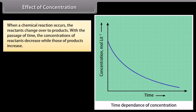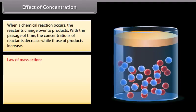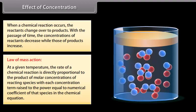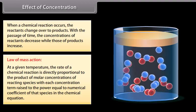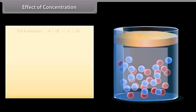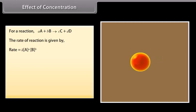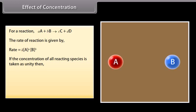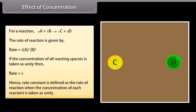When a chemical reaction occurs, the reactants change over to products. With the passage of time, the concentrations of reactants decrease while those of products increase. Law of mass action: at a given temperature, the rate of a chemical reaction is directly proportional to the product of molar concentrations of reacting species, with each concentration term raised to the power equal to the numerical coefficient of that species in the chemical equation. Rate = K[A]^a[B]^b. If the concentration of all reacting species is taken as unity, then rate equals K; hence, rate constant is defined as the rate of a reaction when the concentration of each reactant is taken as unity.